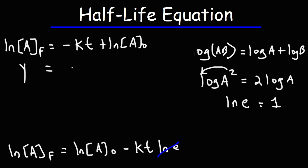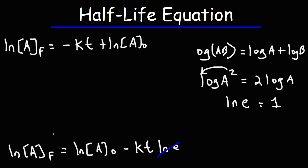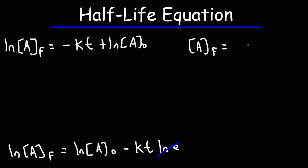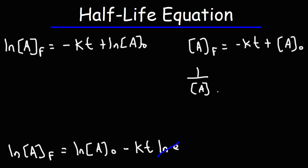This is the integrated rate law expression for a first-order reaction in slope-intercept form — Y equals MX plus B — where the Y-intercept is LN(A initial) and the slope is negative K. For a zero-order reaction, you have a similar expression but without the natural log symbol. For a second-order reaction, it's going to be positive KT instead of negative KT.